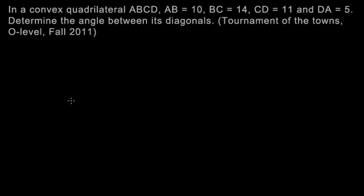In a convex quadrilateral ABCD, AB is 10, BC is 14, CD is 11, and DA is 5. Determine the angle between its diagonals.